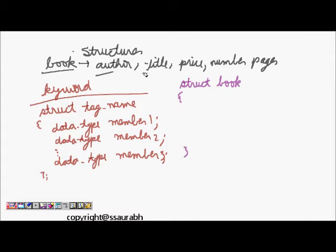Our first element is author. What should be its data type? It will be a character array. So we will write character author, and let's say the size is 20. Book title will again be a character array, so book name, and let it be of size 30.